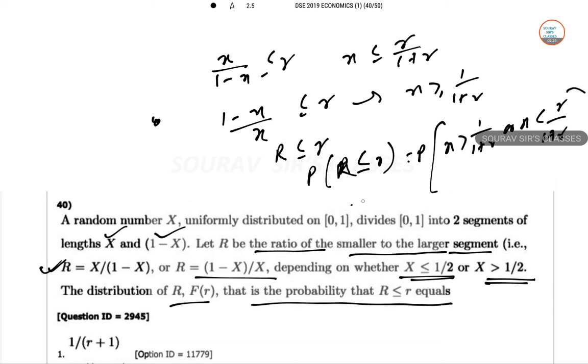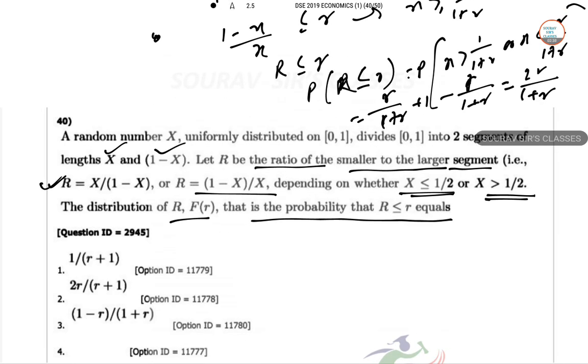So which is r/(1+r) plus 1 minus 1/(1+r), which will be 2r/(1+r). So this is the correct option.